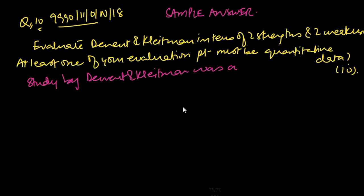Now we will be looking at a sample question. This question is taken from the paper 11 of October-November 18. Evaluate Dement and Kleitman in terms of two strengths and weaknesses, and one of the evaluation must be about the quantitative data. If you remember, Dement and Kleitman study was in the biological studies. So the first thing is that it was a lab experiment. So if it is a lab experiment, then what are the key features that you will be writing down? That it is a highly controlled experiment and highly standardized.